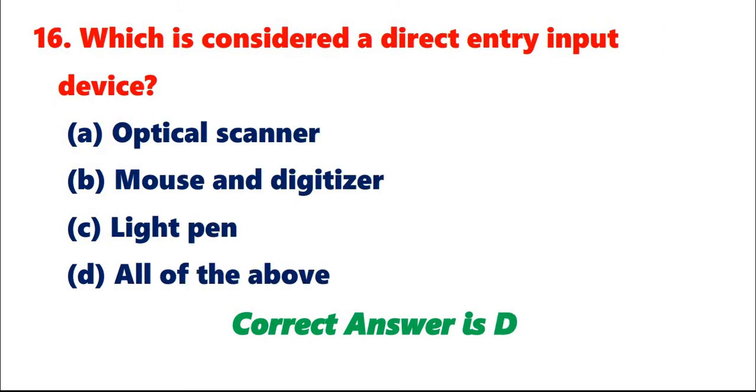Question 16: Which is considered a direct entry input device? A. Optical scanner. B. Mouse and digitizer. C. Light pen. D. All of the above. Correct answer is D.